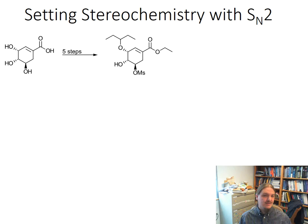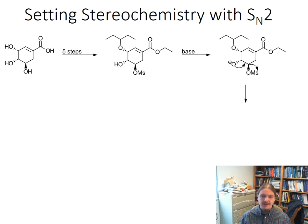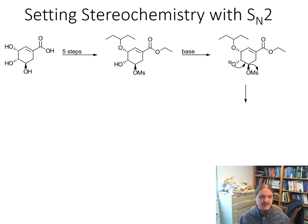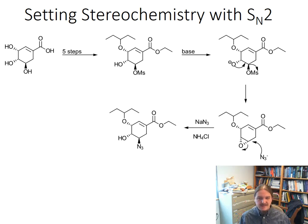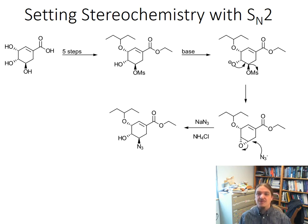Shikimic acid undergoes five steps — the same five steps shown on the vocabulary slide — to prepare it for the first SN2 reaction. The OMS group, the mesylate group, is an activated leaving group. When that first intermediate is treated with base, it deprotonates the alcohol, and the alkoxide anion can act as an internal nucleophile and perform an SN2 reaction inside the molecule. The result is a three-membered ring ether called an epoxide. Most undergraduate course sequences spend a whole chapter on epoxides, so if you haven't covered them yet, they're coming.